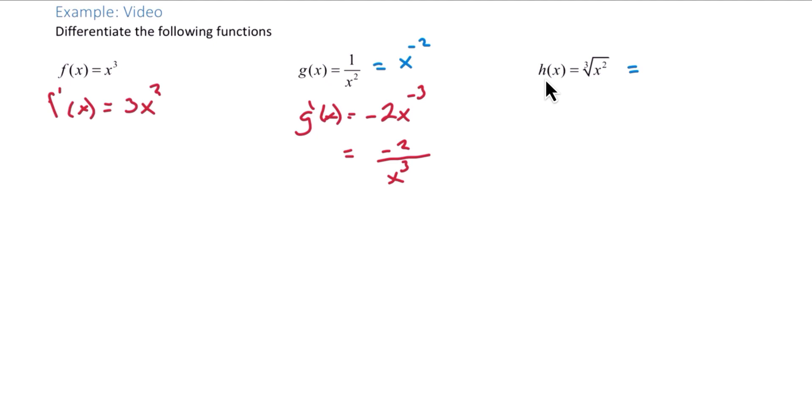With h, we can rewrite this as x to the 2 thirds power. And now, h prime is, bring down the power, and subtract 1 from the exponent, and we get negative 1 third.